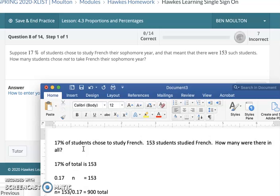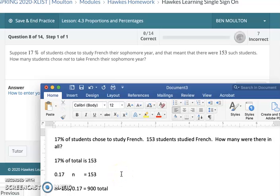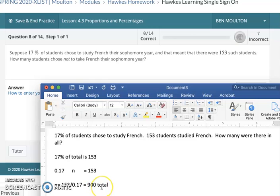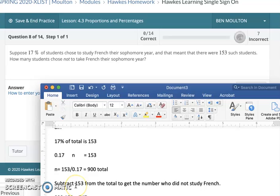So 17% of your total is 153 is another way of wording this, which means 0.17, of means multiply, your total call it n, is means equals 153. Long story short here is we need to divide 153 by 0.17. When you do that, you will get 900. So that means there were a total of 900 students, 153 of which took French, and that makes sense. 17% should be quite a bit less than half of your students, and 153 is definitely less than half. But the question they're asking is how many students chose not to take French their sophomore year. So what we need to do now is subtract 153.